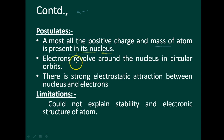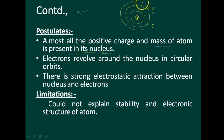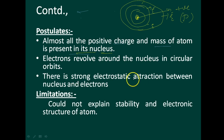The positive charge and mass is present in the nucleus. Electrons revolve around the nucleus in circular orbits — these are the orbits where the electrons are moving and are present. The nucleus has positive charges which are the protons. There is a strong electrostatic attraction between the nucleus and the electron.